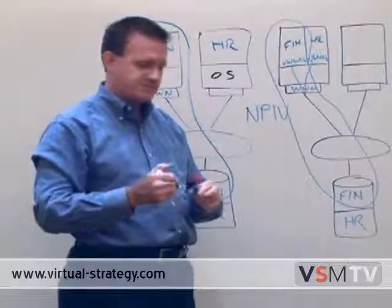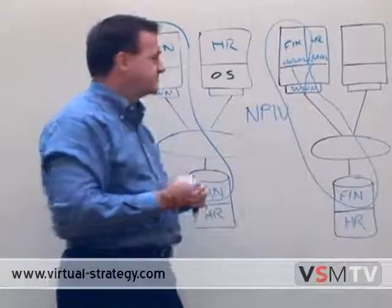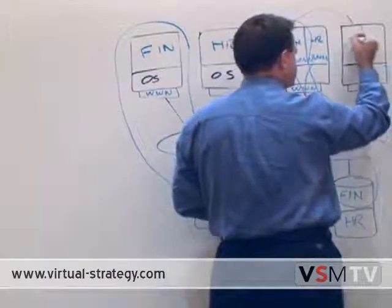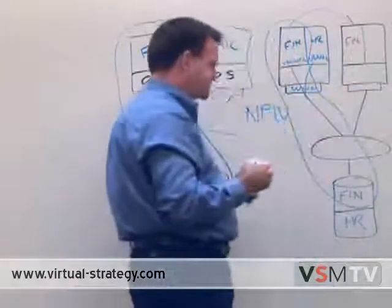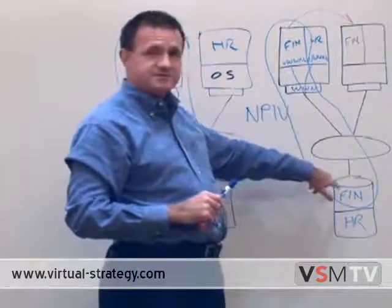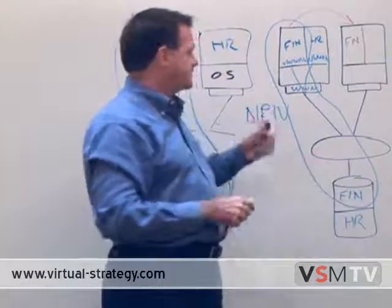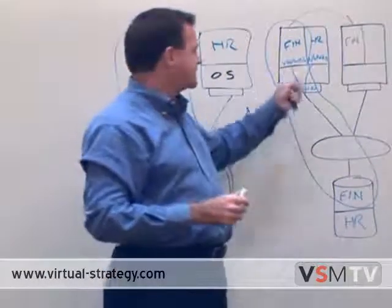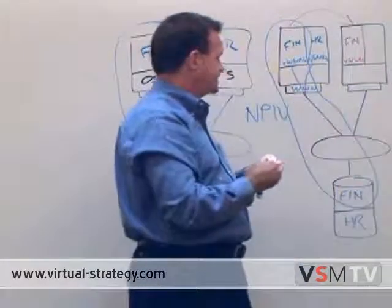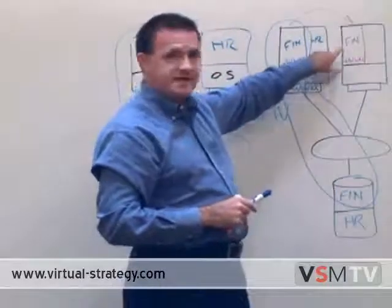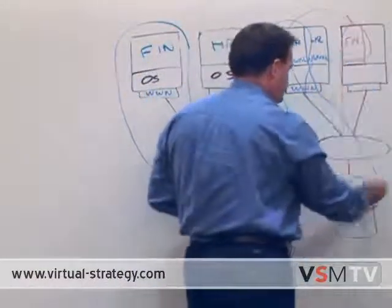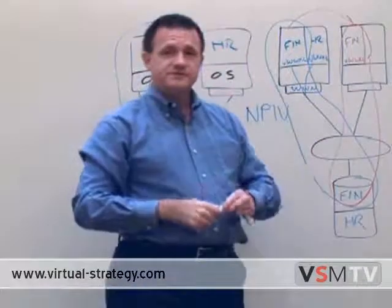There's an added benefit that comes when you actually want to move that virtual machine to another physical server. Let's say we're going to migrate that finance application over to another physical server. The question is: how do you do that if the physical server you're moving the finance application to doesn't have access to that storage — it's not in the zone? Well, when you migrate that virtual machine, it carries its virtual worldwide name with it. So this virtual machine is now known to the SAN by that worldwide name, and its zone moves over to the new physical server.